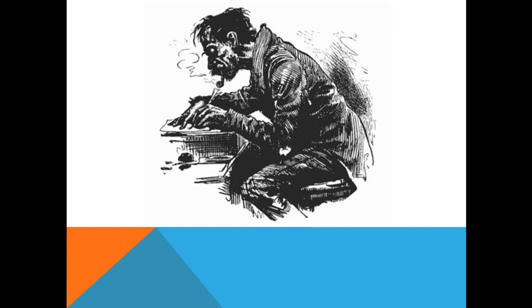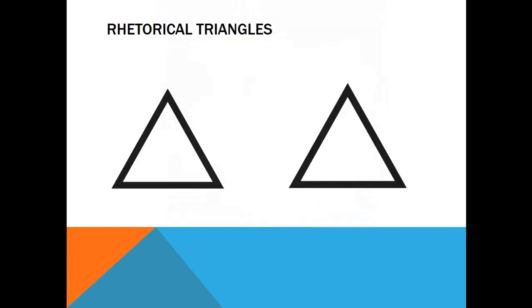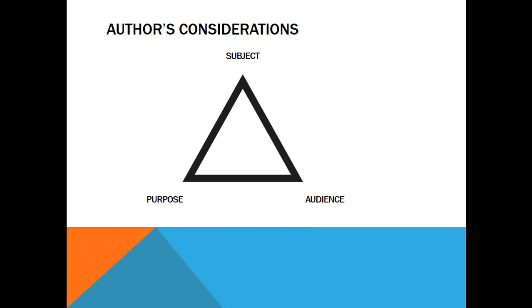So those people had to think about some stuff before they actually sat down to write. These are the things I like to call author's considerations, and they are one of the rhetorical triangles that we're going to talk about this semester. I like to think in terms of rhetorical triangles because they help us remember the key things you need to keep in mind as you're writing, particularly an argumentative type of paper. The first rhetorical triangle is these author's considerations: subject, purpose, and audience. We're going to focus on those three things today.